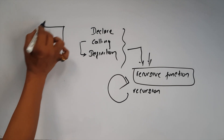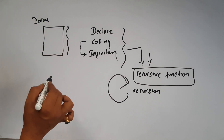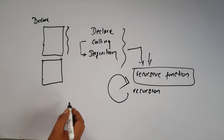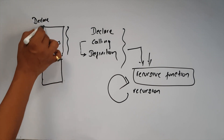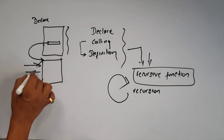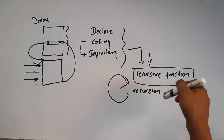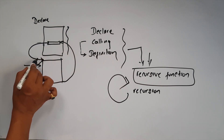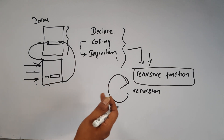We have a main function. What is a recursive function? We have to declare the main function. In the main module, we are calling the main function. If you use the call statement, you can execute it — this is how you do this function.